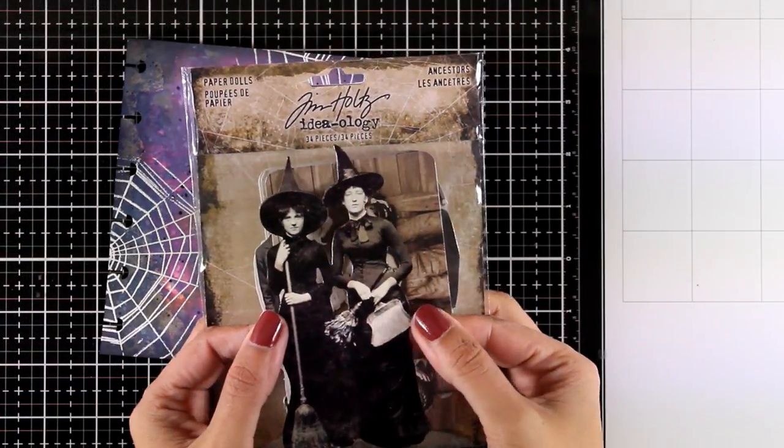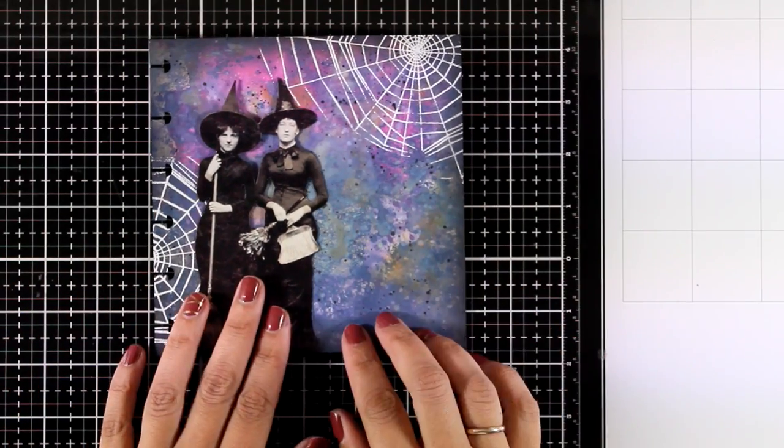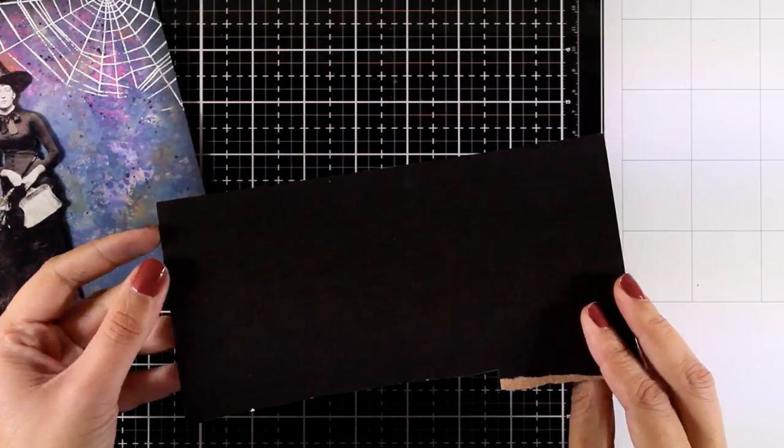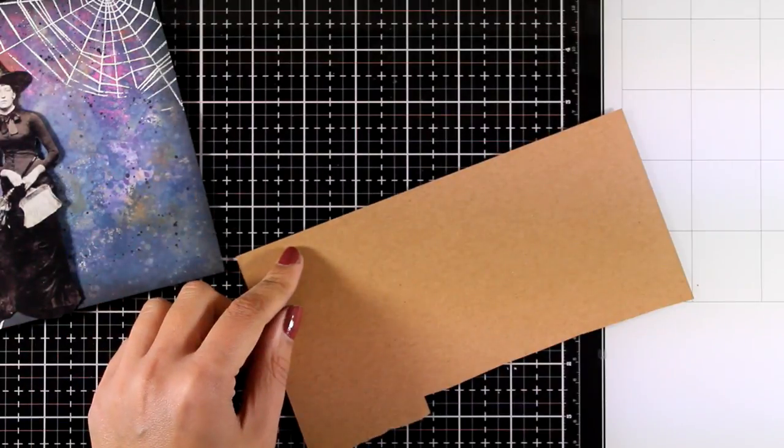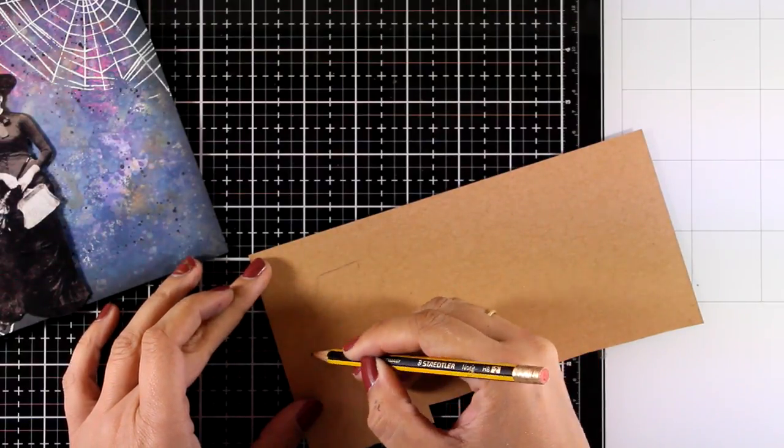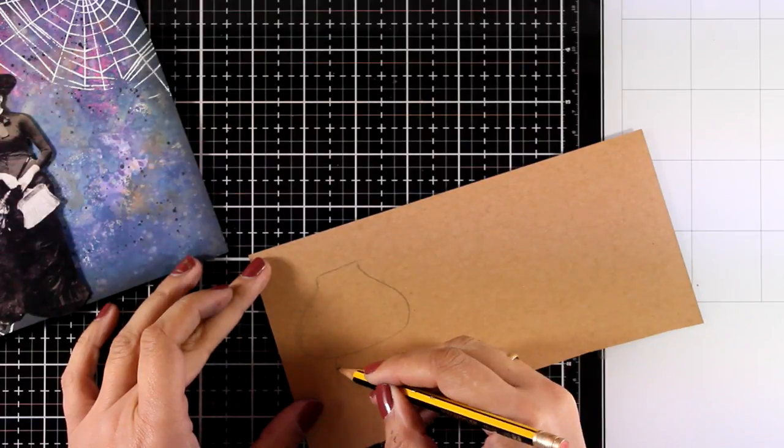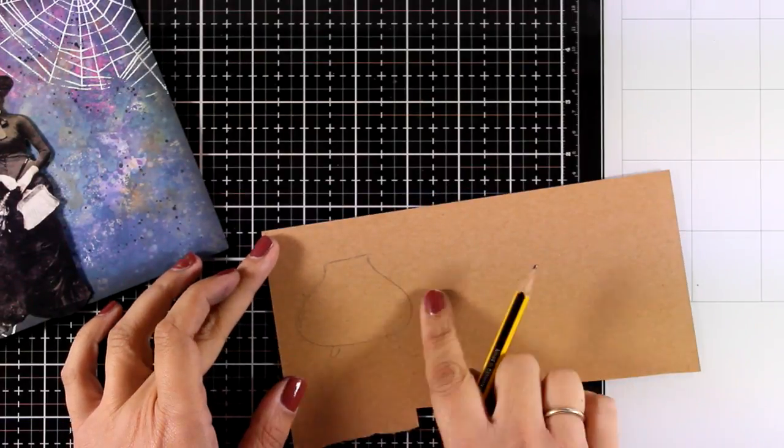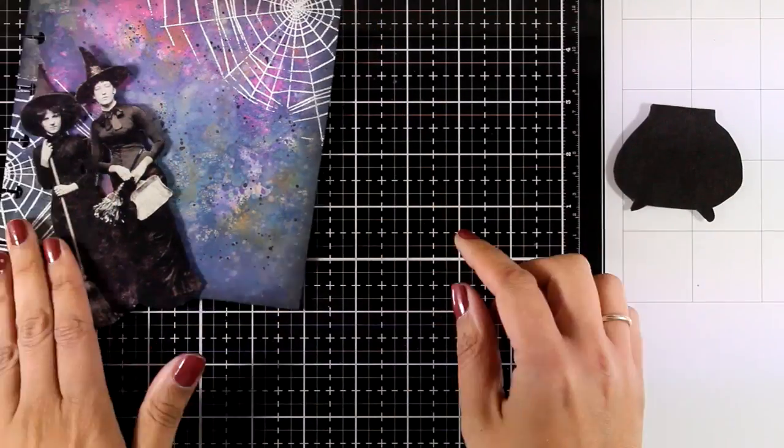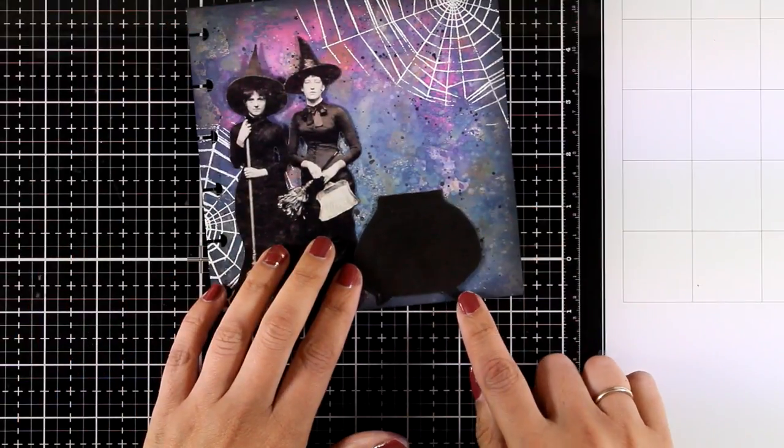And I'm planning to use these two witches from the Ancestors Halloween collection by Tim Holtz. And I want to give them something extra for the page. So I decided to draw a cauldron. I am going to use a pencil at the back of this black cardstock. I'll just draw a cauldron there. Give it some legs. And I will use my scissors to cut it out. And as I was cutting it I made sure that I made it slightly bigger.